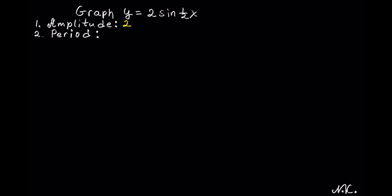The next thing we need to calculate is the period. The period is calculated by taking 2 pi and dividing it by the coefficient of x, and the coefficient of x is 1 half. So let's divide 2 pi by 1 half. Since we are dividing by a fraction, we keep the first thing as is — so we have 2 pi — we change division into multiplication and flip the second fraction, so we have 2 over 1.